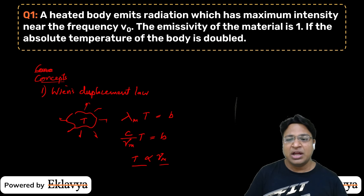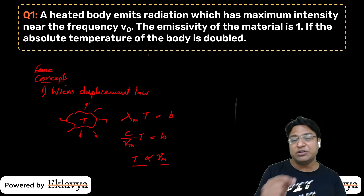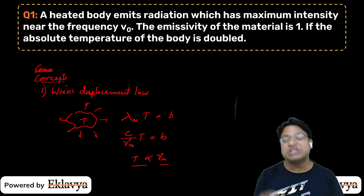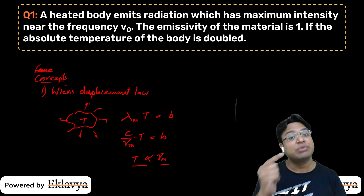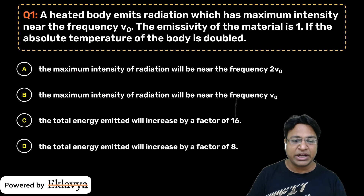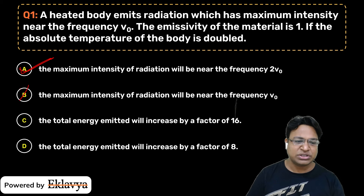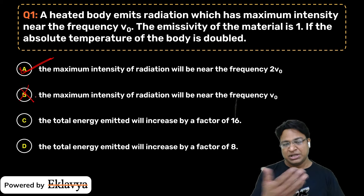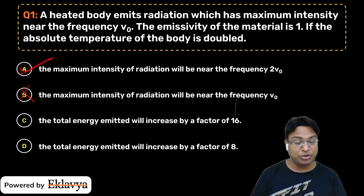So the question is: if the absolute temperature of the body is doubled, the frequency of maximum radiation will also be doubled. The maximum intensity of radiation will be near frequency 2ν₀. So this option is correct. The next option has a different value, so it will be different.